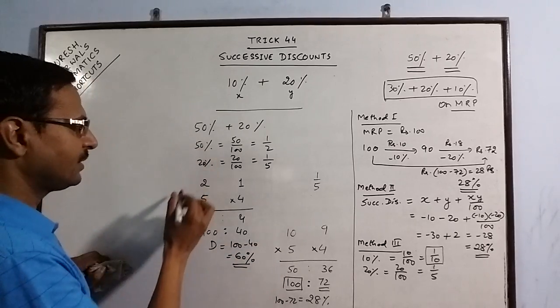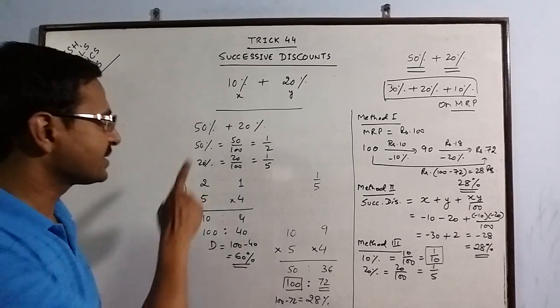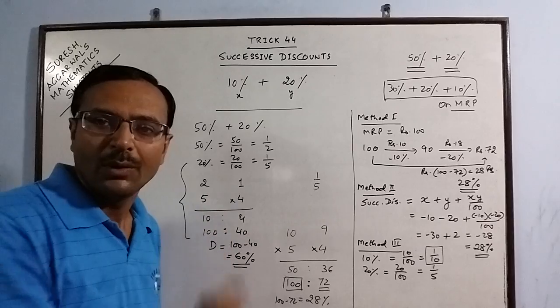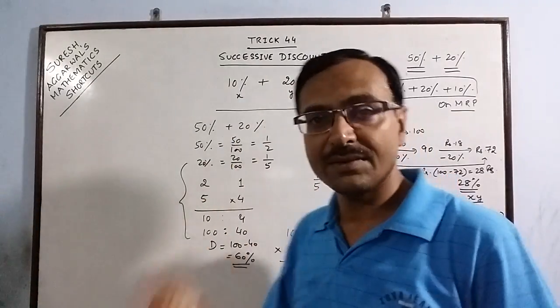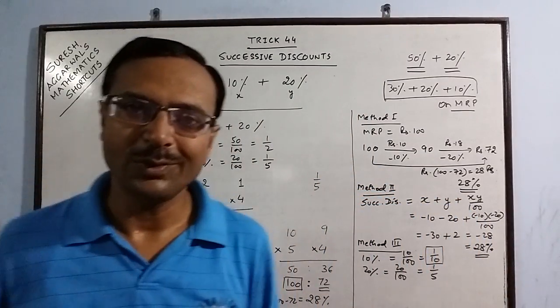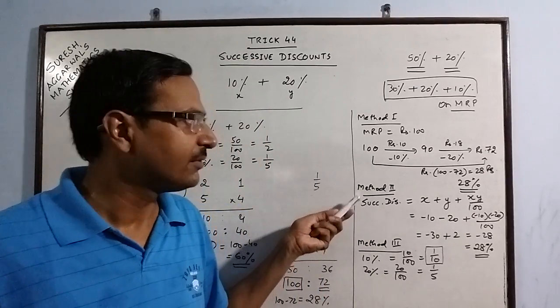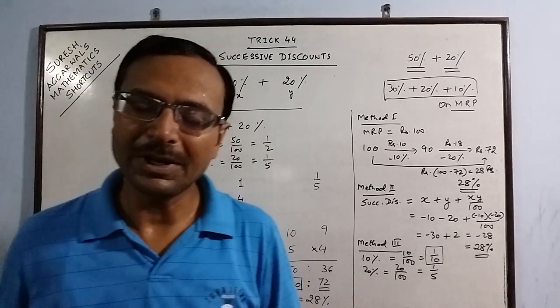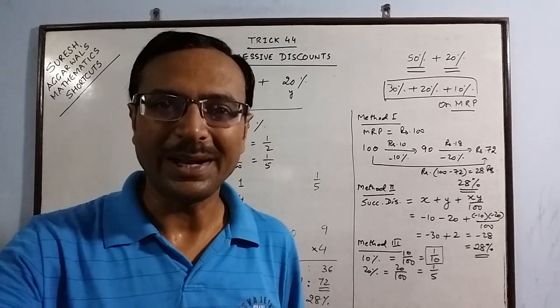This method is far more easier and involves lesser calculation to find the successive discount equivalent to 2 given discounts. And you can extrapolate this method for calculating a single discount when there are 3 successive discounts given. You can try that. Try any of the 3 methods, whichever you are comfortable with. But second method can be used only for 2 discounts, whereas first and third method can be used for 3 discounts as well. Keep learning, keep enjoying, it is a very important concept for competitive exams. And share and subscribe the video if you like it.